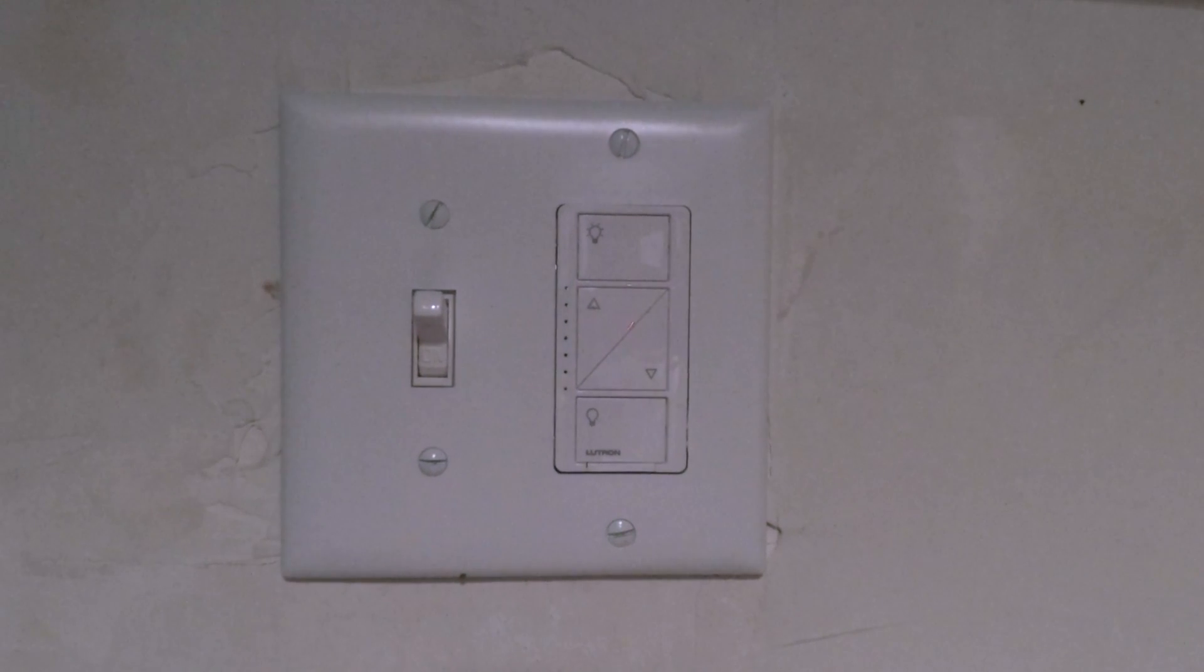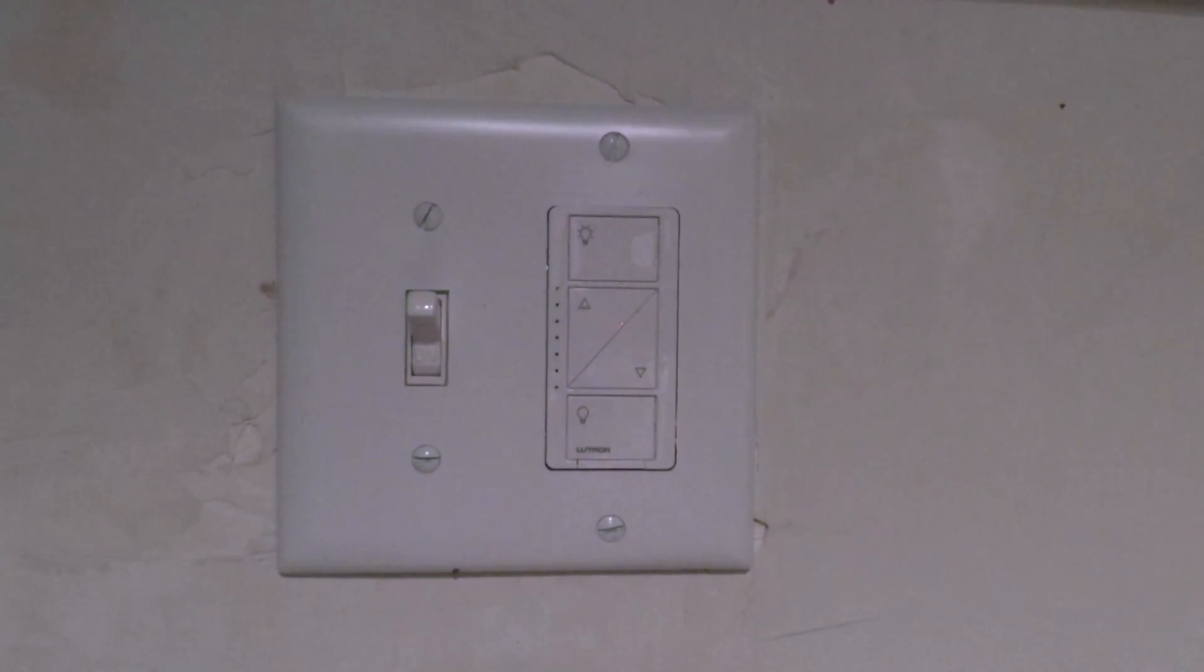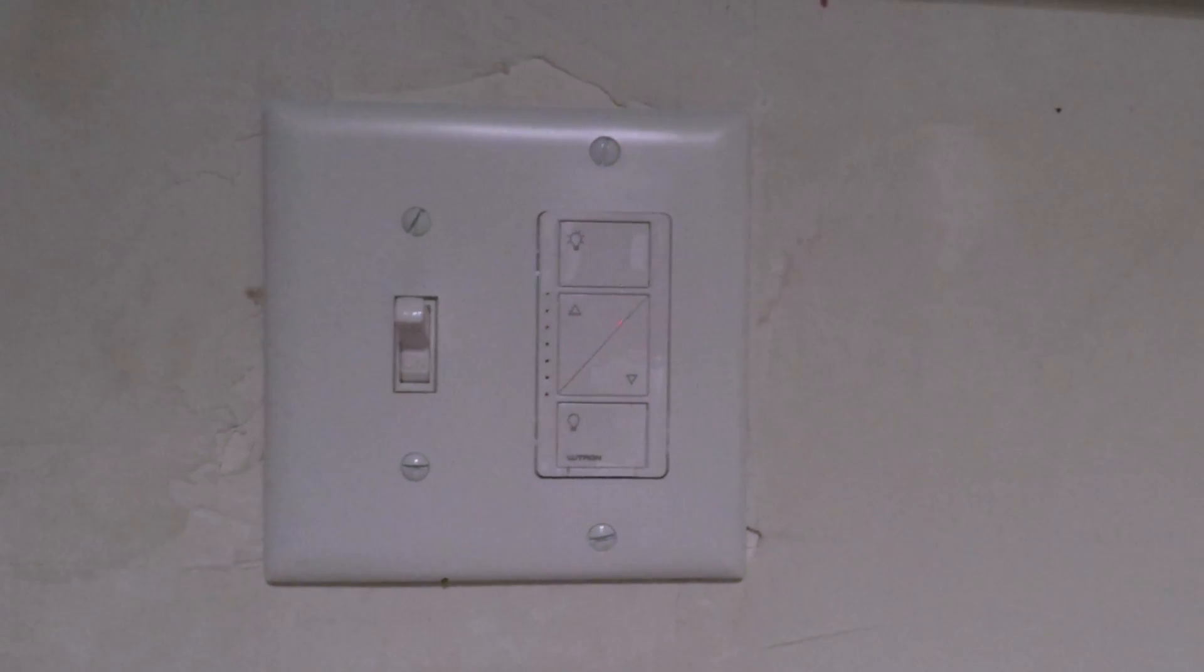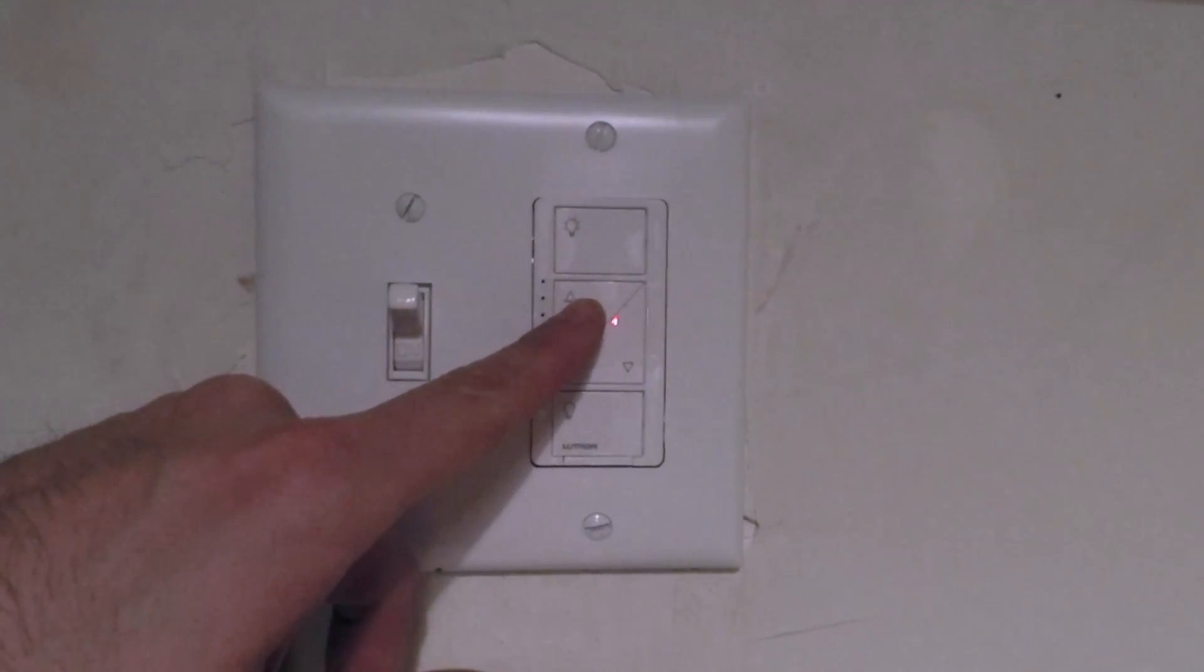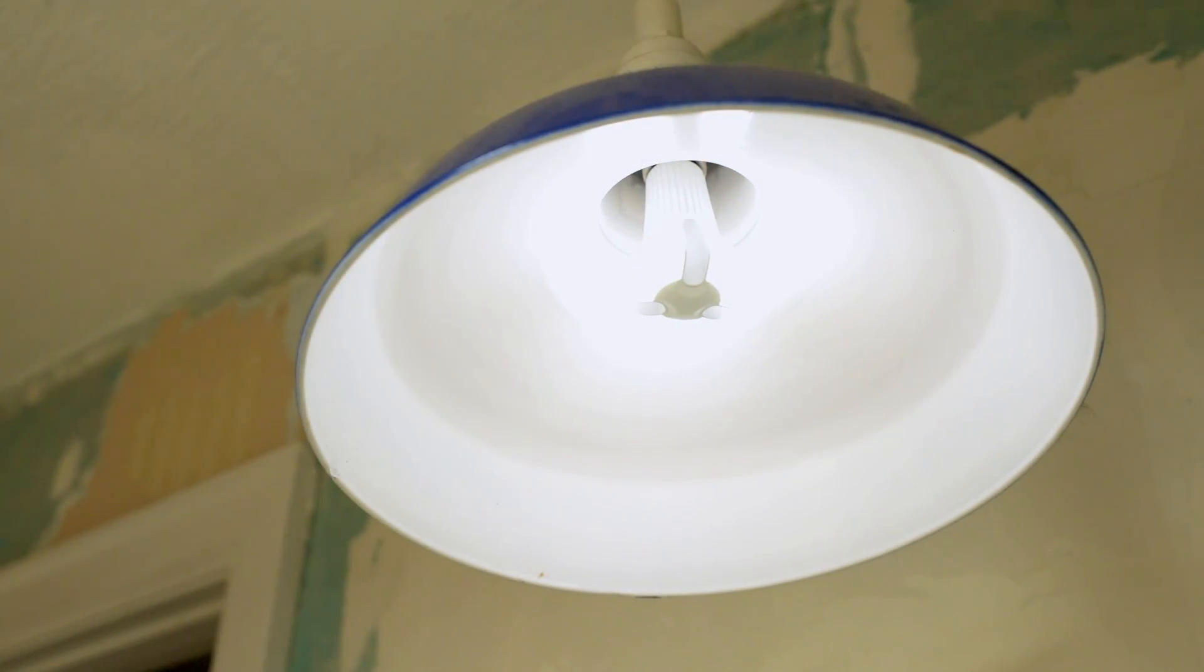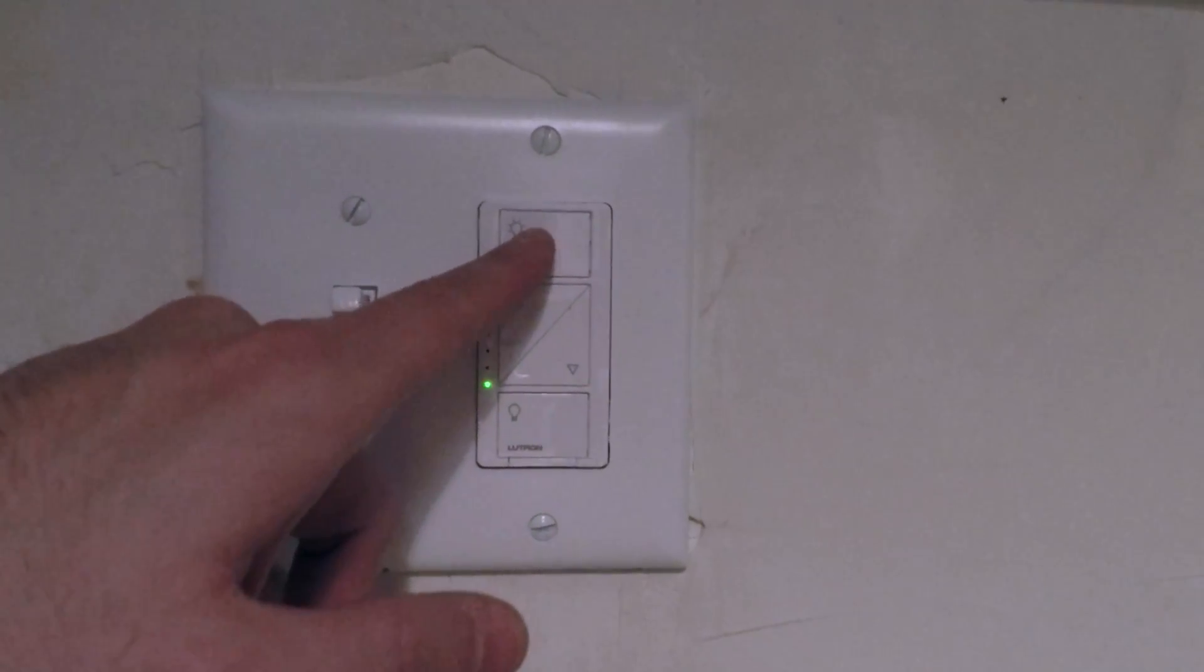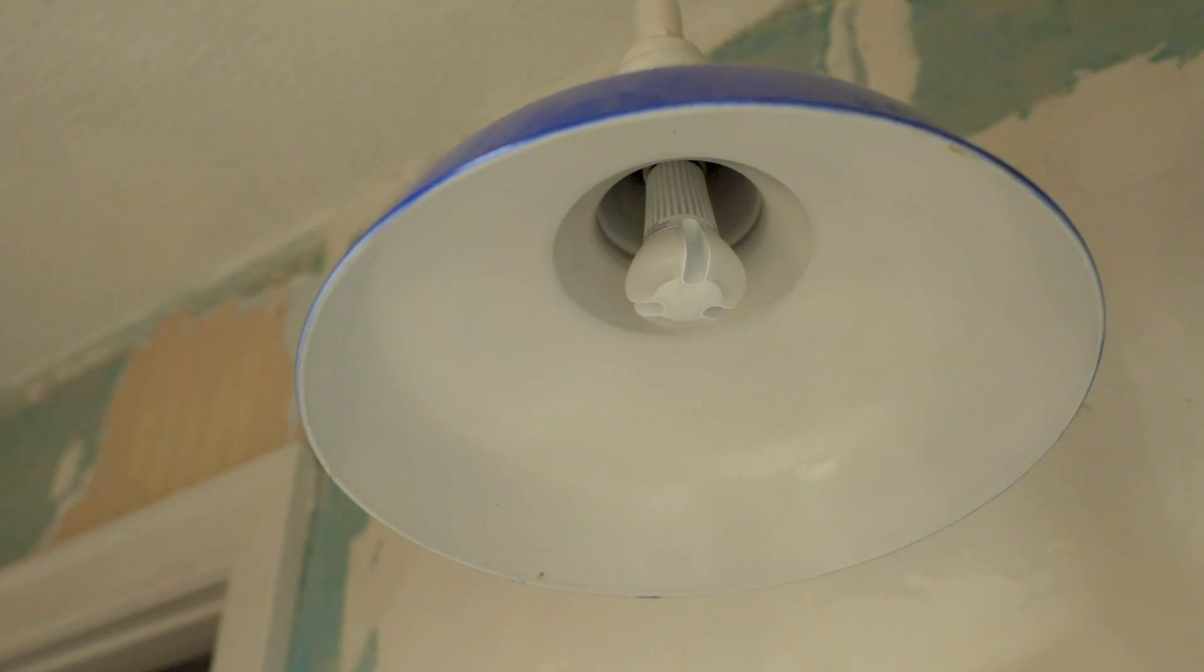Okay. So the first thing that we're going to do is I'm just going to prove to you that the light turns on with the Phillips bulb installed. So four clicks and it turns on. You can raise it all the way up, bring it all the way down, turn it off.